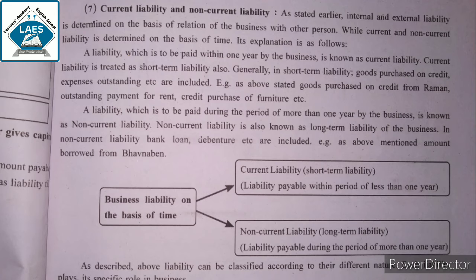Internal and external liability — basis is the person, meaning owner and third party. Now, current and non-current liability — basis is time. A liability which is to be paid within one year by the business is known as current liability.